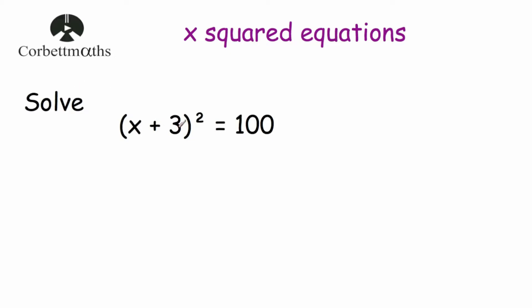Our last question says: solve (x + 3)² = 100. That means we have a number, we add 3, then we square it to get 100. Working backwards, the square root of 100 is 10, so x plus 3 must equal 10 or negative 10, because 10 squared is 100 and negative 10 squared is also 100. So: x plus 3 equals 10 or x plus 3 equals negative 10.